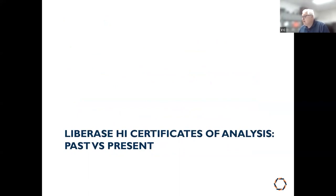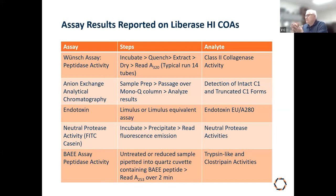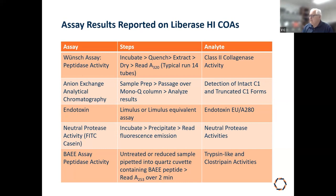The LIBERASE HI certificates of analysis: when we started the LIBERASE project in the mid-90s, the Wunsch assay was already set up — that's how Boehringer-Mannheim Biochemicals measured collagenase activity for Collagenase P. It's an involved assay, but the limitation is it only measures Class 2 collagenase activity, though it is fairly reproducible. The anion exchange chromatography method developed by Thomas Heffley in the 80s is superb but requires specific equipment.